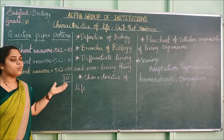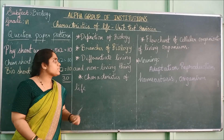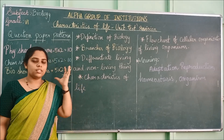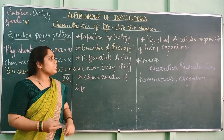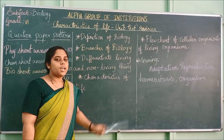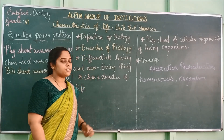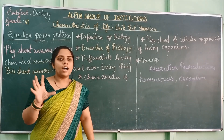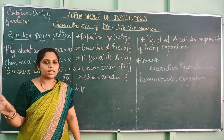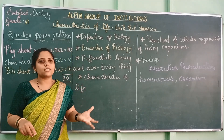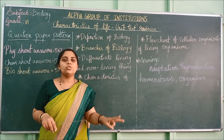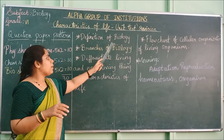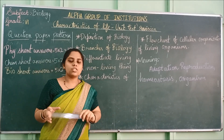Let me go through all the topics you need to revise. First, you need to learn the definition of biology. It is the first topic in your lesson — the lesson name is 'Characteristics of Life.' In that, you should learn what biology is, what the definition of biology is, and how it is classified. Minimum you have to write 2 to 3 points on the definition of biology. Next is the branches of biology.